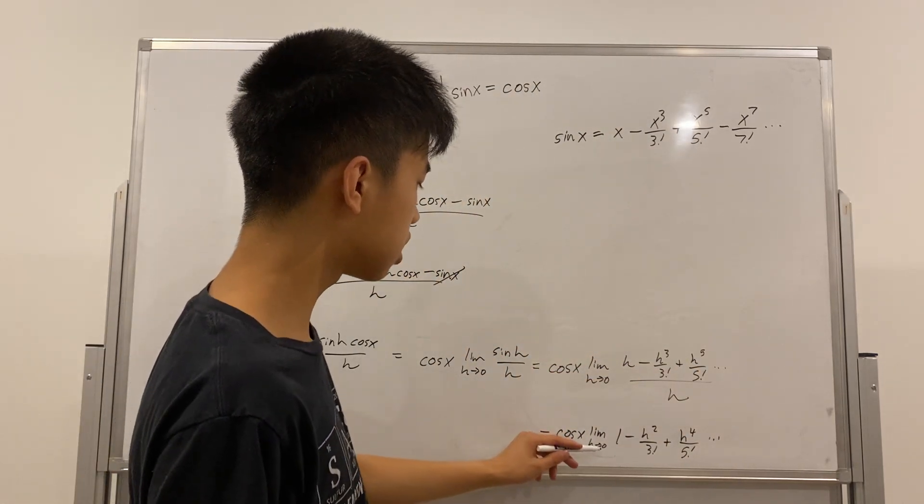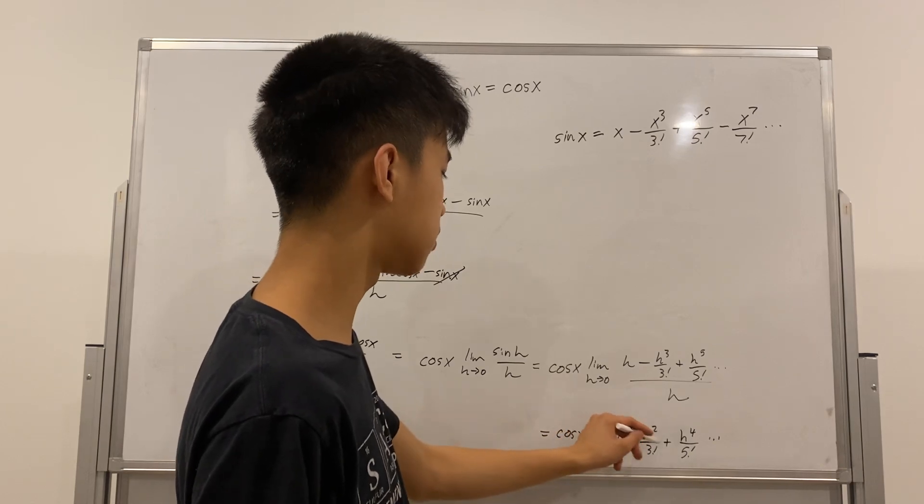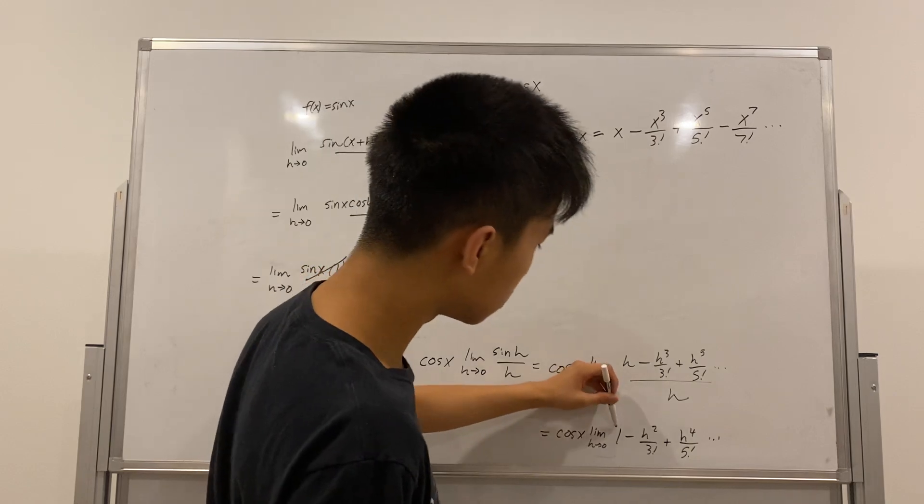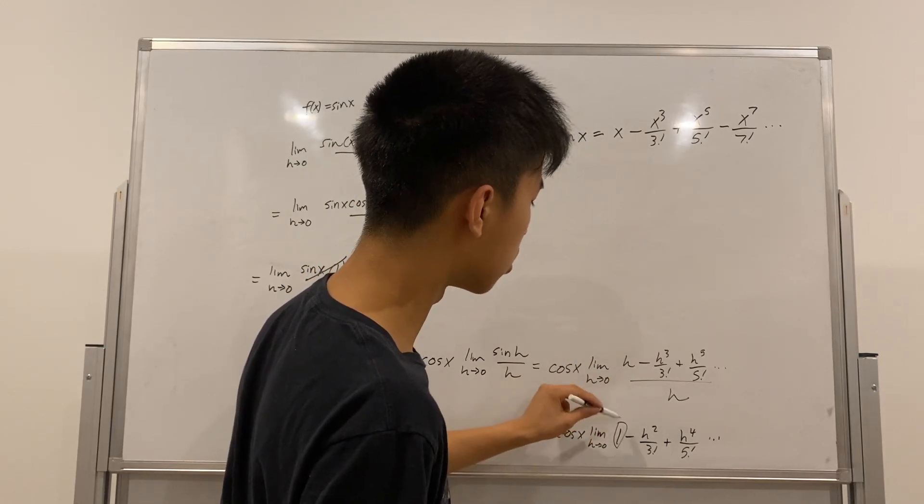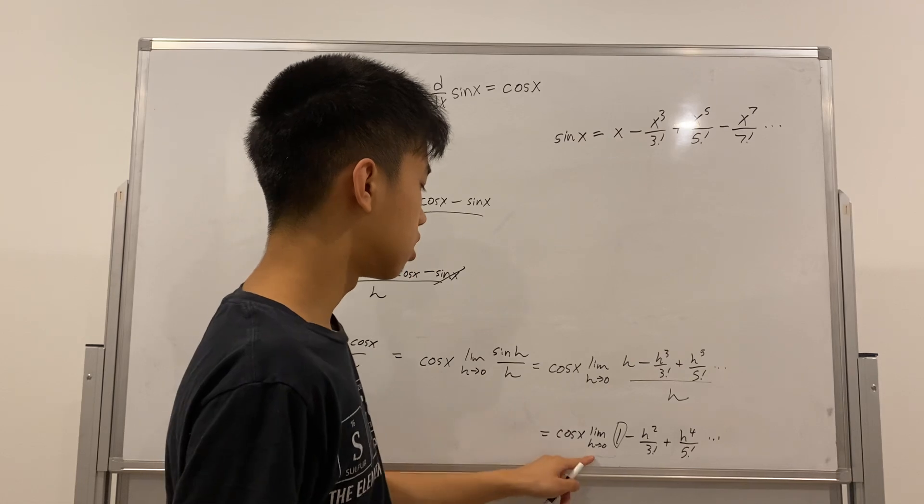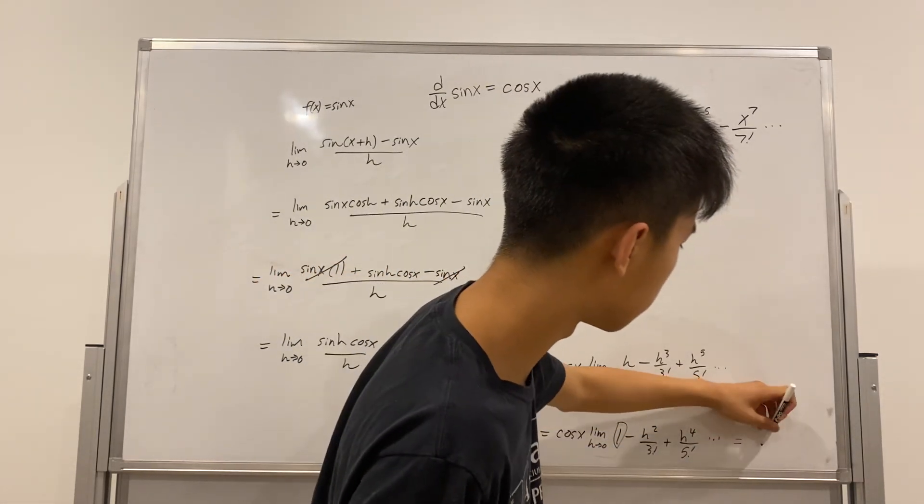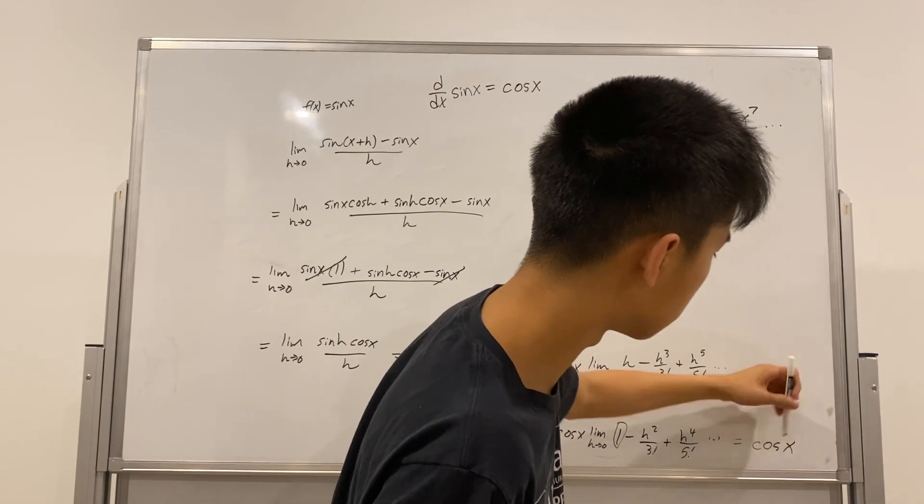So, if you plug 0 into any term, any h term, you just get 0. So, the only term that is non-zero is that 1 right there. So, this whole limit here is just 1. Therefore, the derivative is cosine of x.